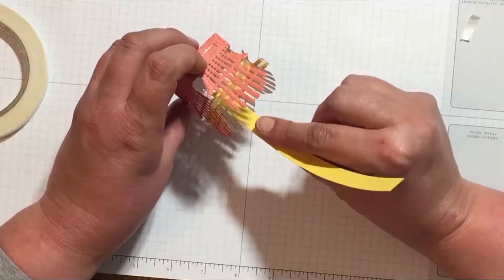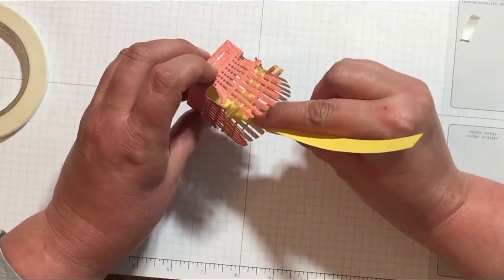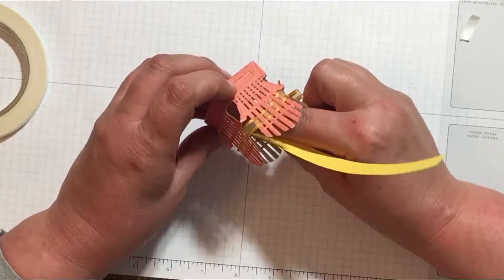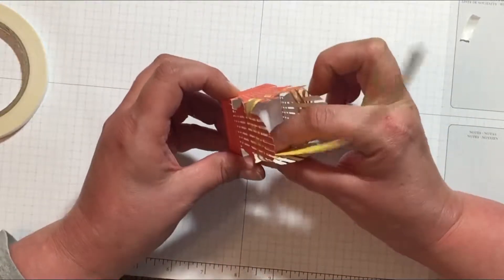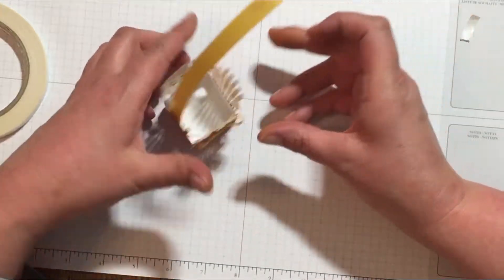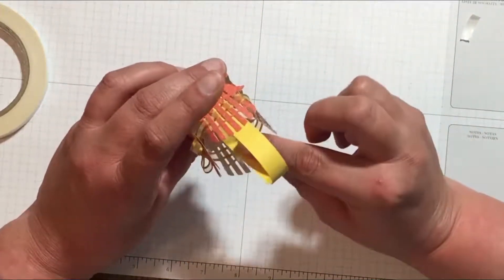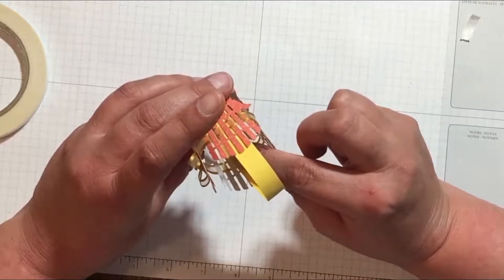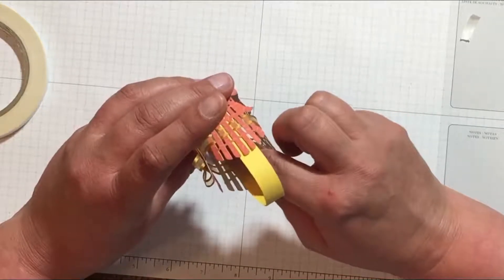Now just attach those taped ends to the inside of the basket by pressing them to opposite sides of the basket base. Make sure the ends are seated all the way down near the bottom of the basket base and that they're pressed firmly to the sides so that they'll really hold.